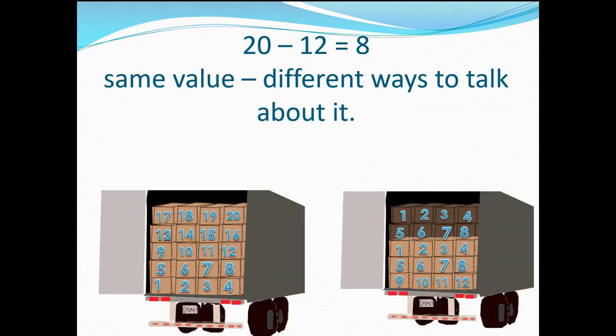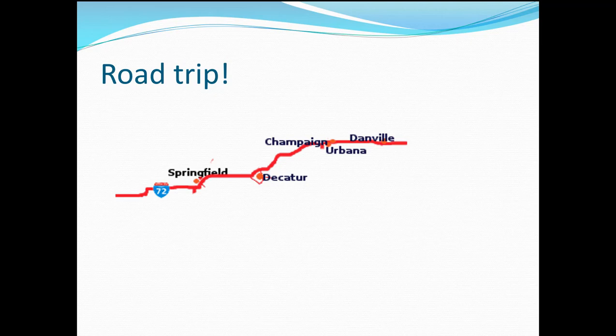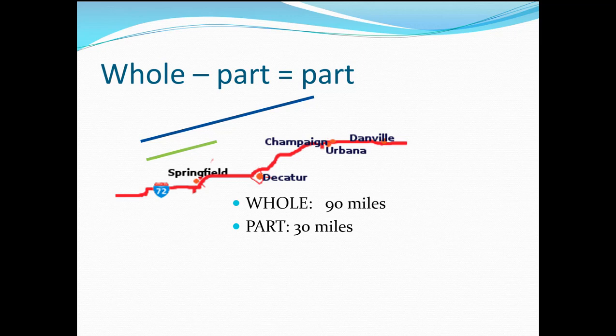It's the same value, different ways to talk about it. Road trip! It's 90 miles from Springfield to Champaign. I've driven part of the trip, 30 miles. How much further do I have to go? Whole minus part equals part. 90 minus 30 equals 60 miles to go.